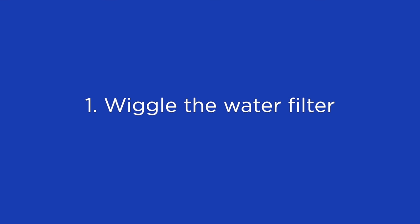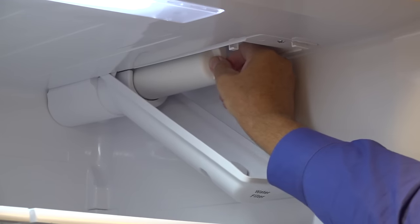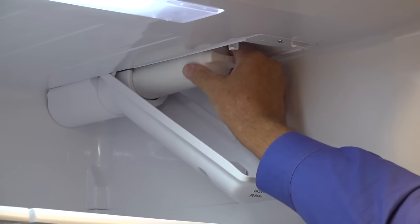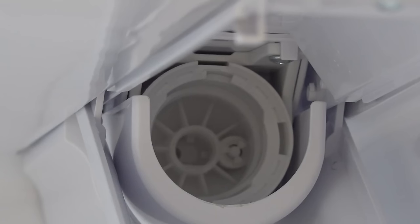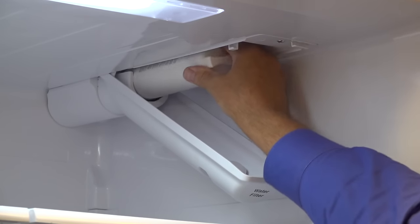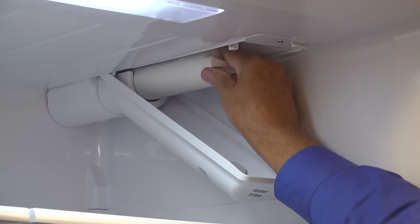Wiggle the refrigerator water filter. When removing or installing the water filter, you may need to wiggle it back and forth slightly. Wiggling the filter helps free up a stuck filter by loosening water seal deposits. Wiggling the new water filter as you insert it will help align the filter as you slide it into the filter head.